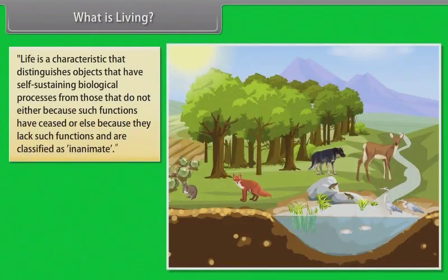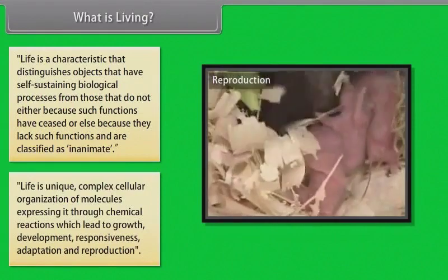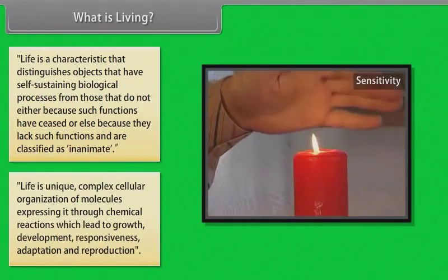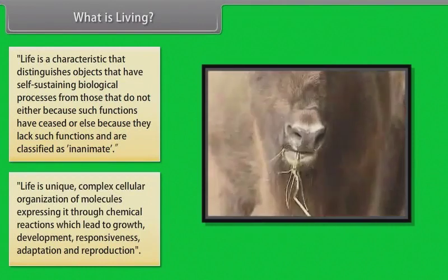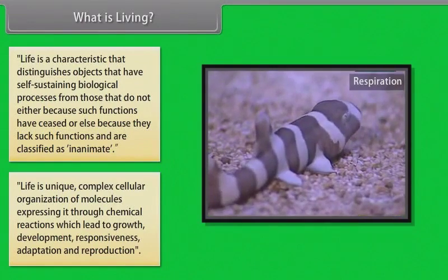What is living? Life is a characteristic that distinguishes objects that have self-sustaining biological processes from those that do not — either because such functions have ceased, or because they lack such functions and are classified as inanimate. Life is a unique complex cellular organization of molecules, expressing it through chemical reactions which lead to growth, development, responsiveness, adaptation, and reproduction.